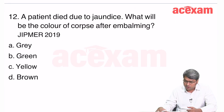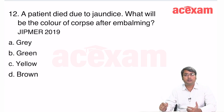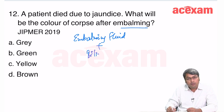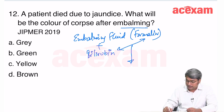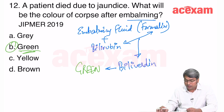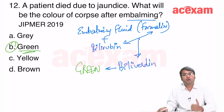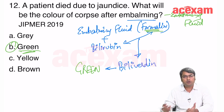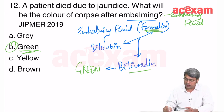A patient died due to jaundice — what will be the color of the corpse after embalming? After embalming, the formalin in the embalming fluid combines with the increased bilirubin in the body (due to jaundice) and produces biliverdin, which is green in color. Therefore, the body will appear green.